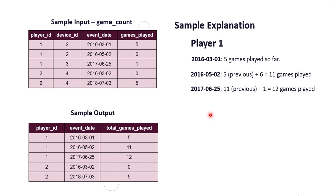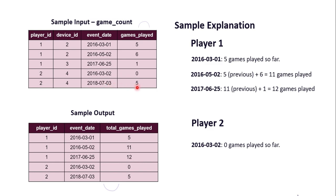Similarly, for player 2, on date 2016-03-02 we can see from the table that zero games have been played so far. For the event date 2018-07-03, he has played 5 games so far — this is because he already played zero games, so zero plus five comes out to 5 games played so far.